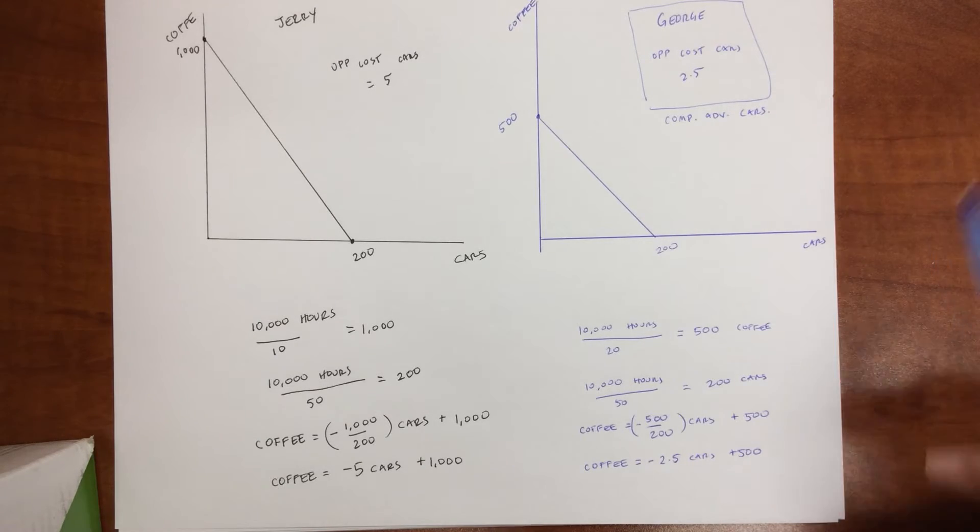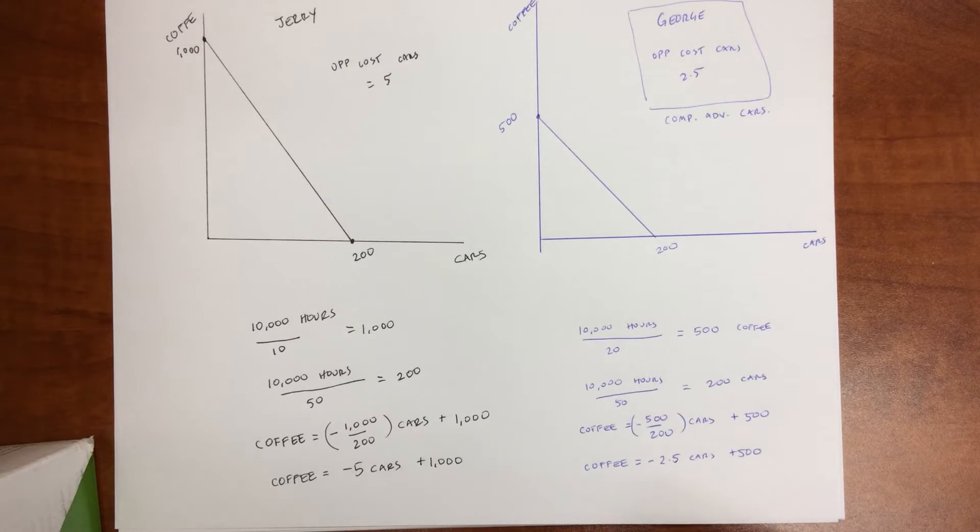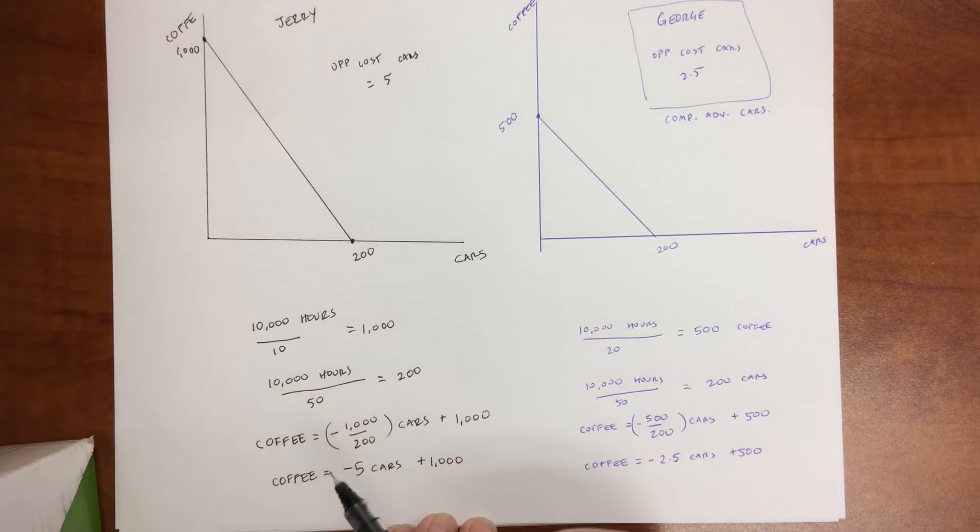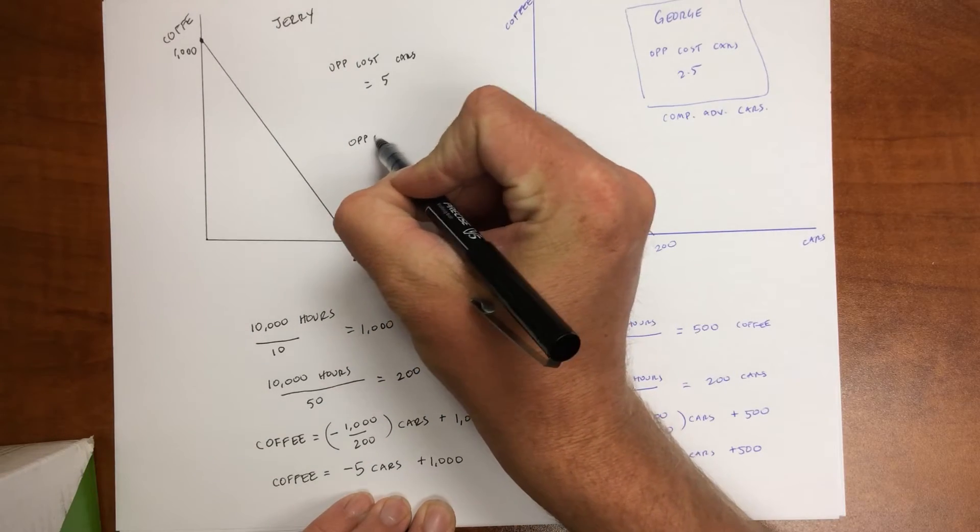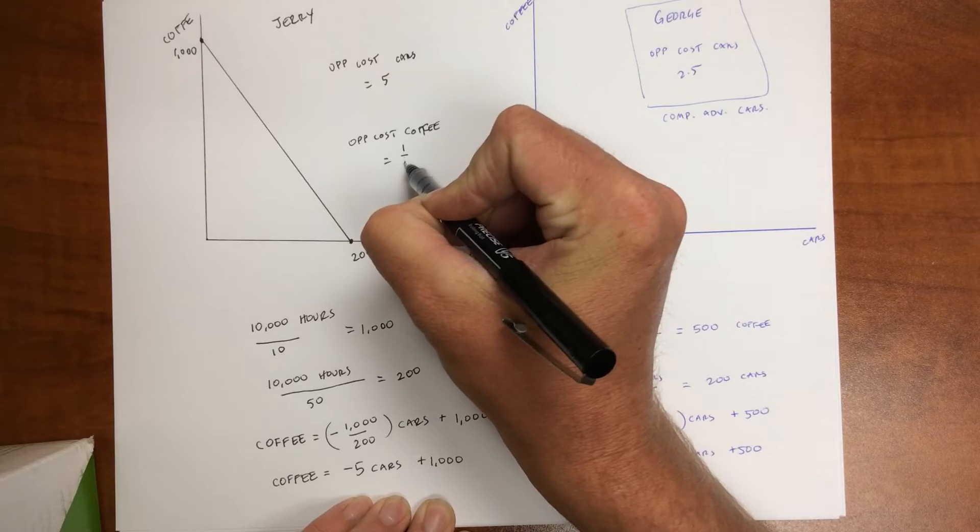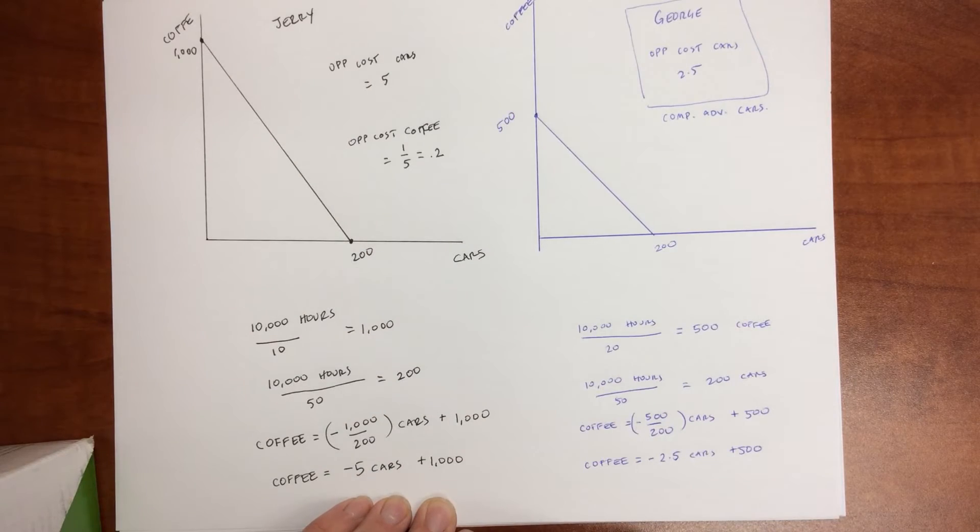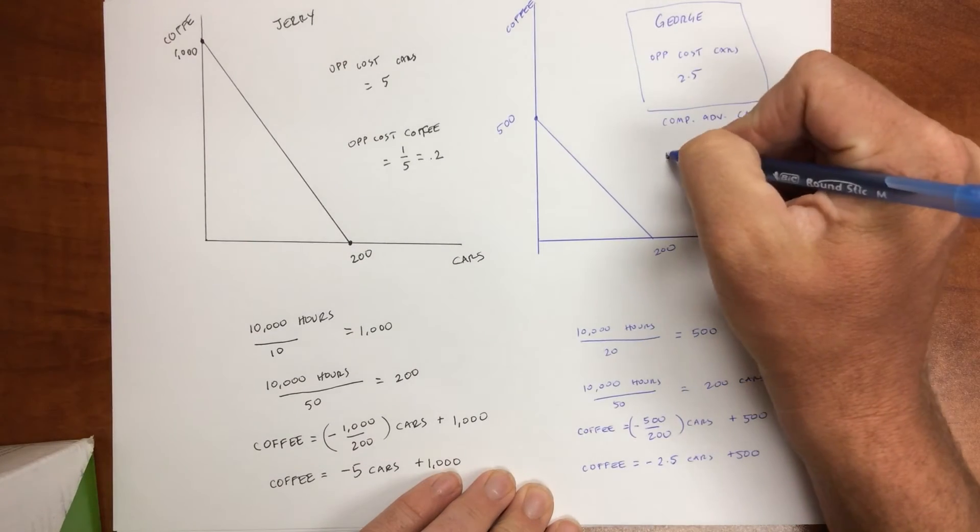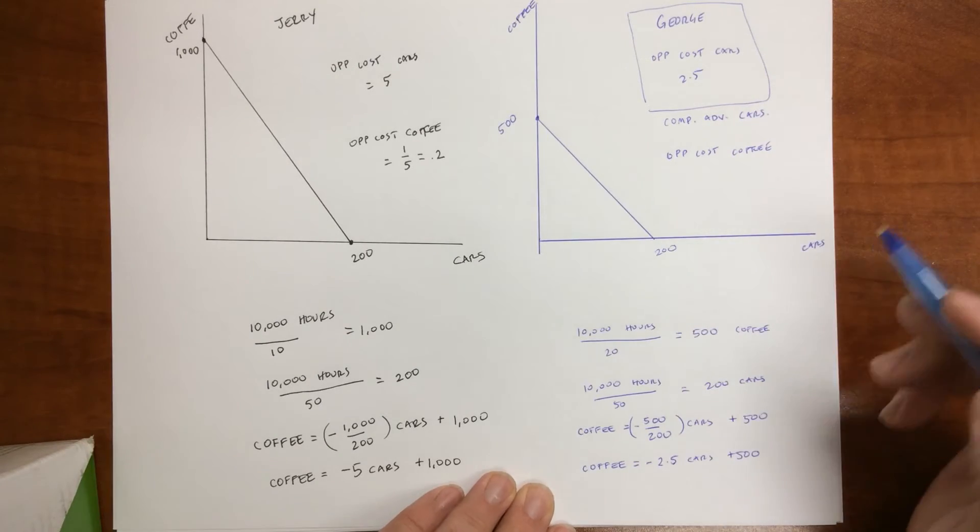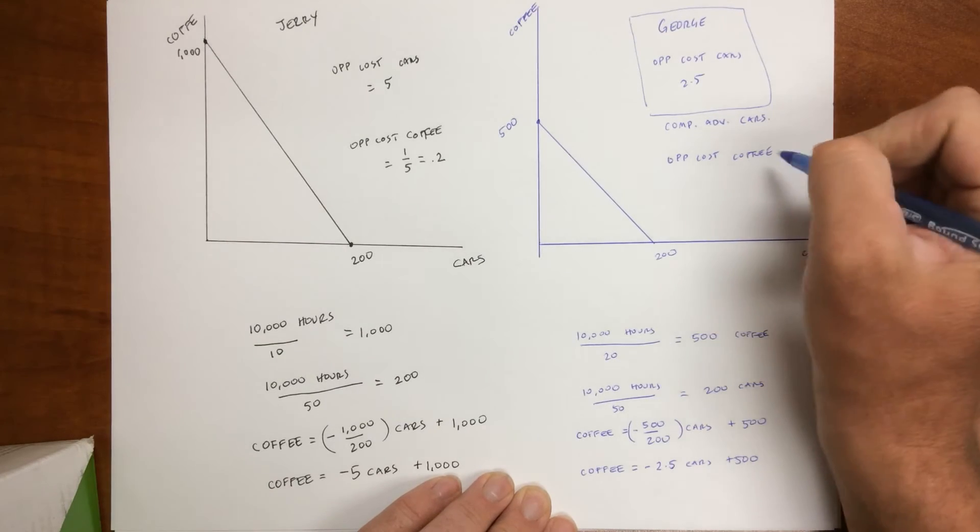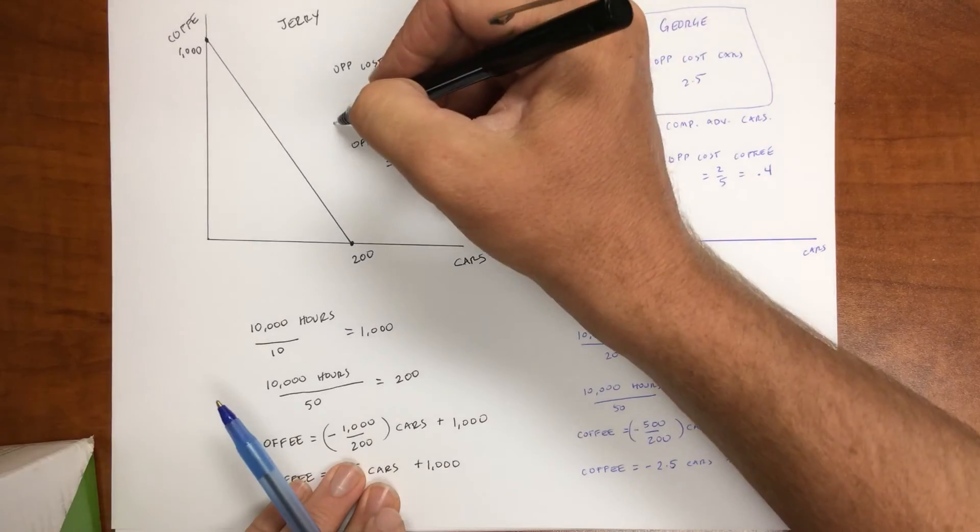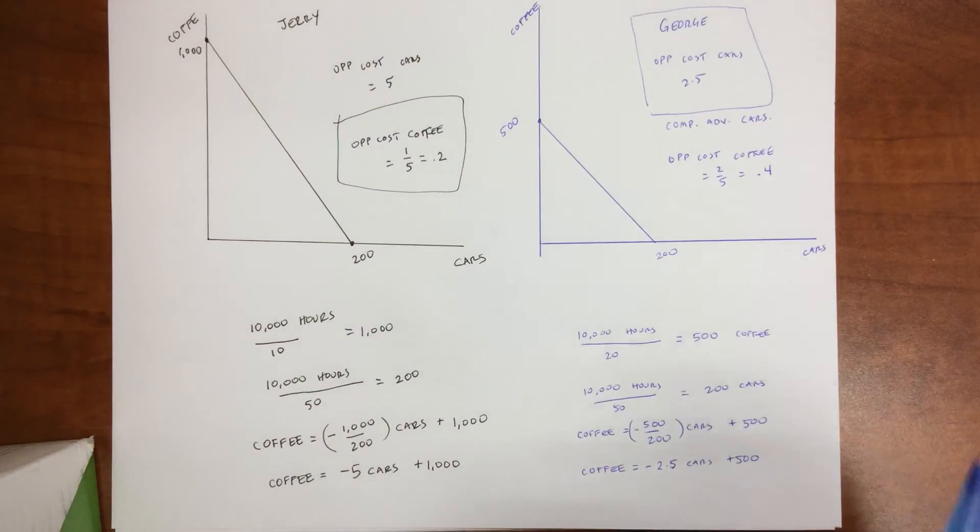Now, if George has the comparative advantage in cars, it's automatically that Jerry's going to have the comparative advantage in coffee. All right. Now, to show that, I would say, what if I give up one car, how many cups of coffee does it take? So the opportunity cost of coffee is equal to 1 over 5 or 0.2. Now, the opportunity cost of coffee for George is 1 over 2.5 or 2 fifths or 0.4. So which number is lower? Well, Jerry's going to be the winner or has the comparative advantage in producing coffee.